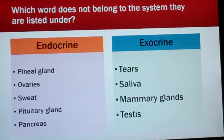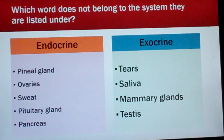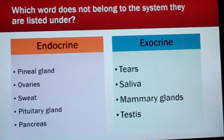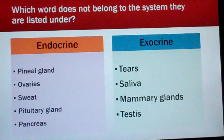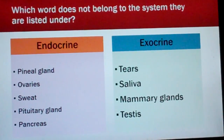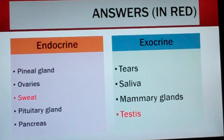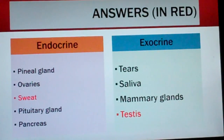Which word does not belong to the system they are listed under? Under endocrine, we have pineal gland, ovaries, sweat, pituitary gland, and pancreas. Which word does not fit in the endocrine system? Under exocrine, we have tears, saliva, mammary glands, and testes. Which word does not fit? The answers are in red: sweat does not belong in the endocrine system — that is exocrine. And testes belong in the endocrine system, not the exocrine.